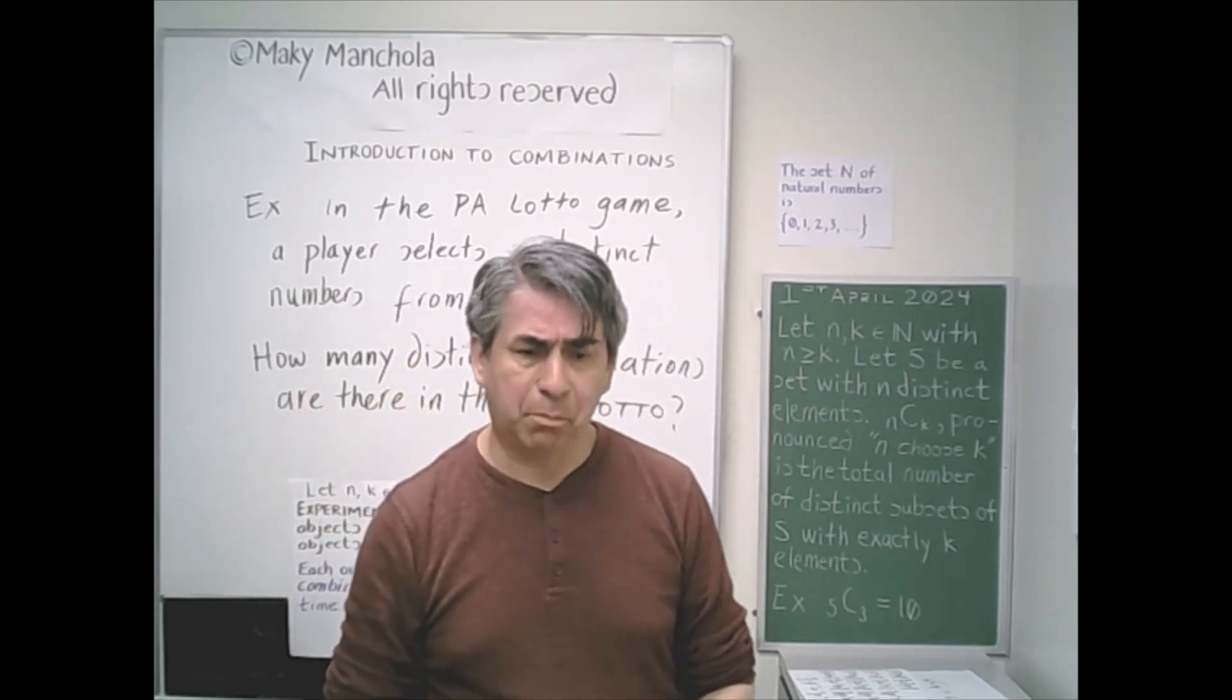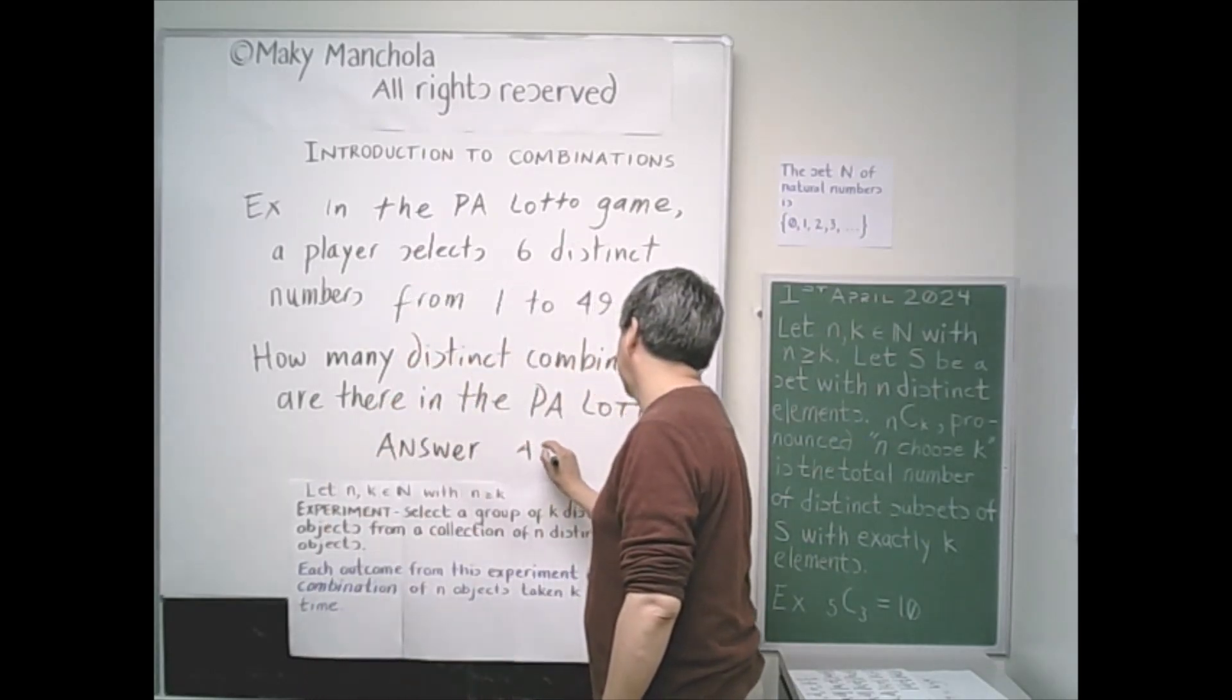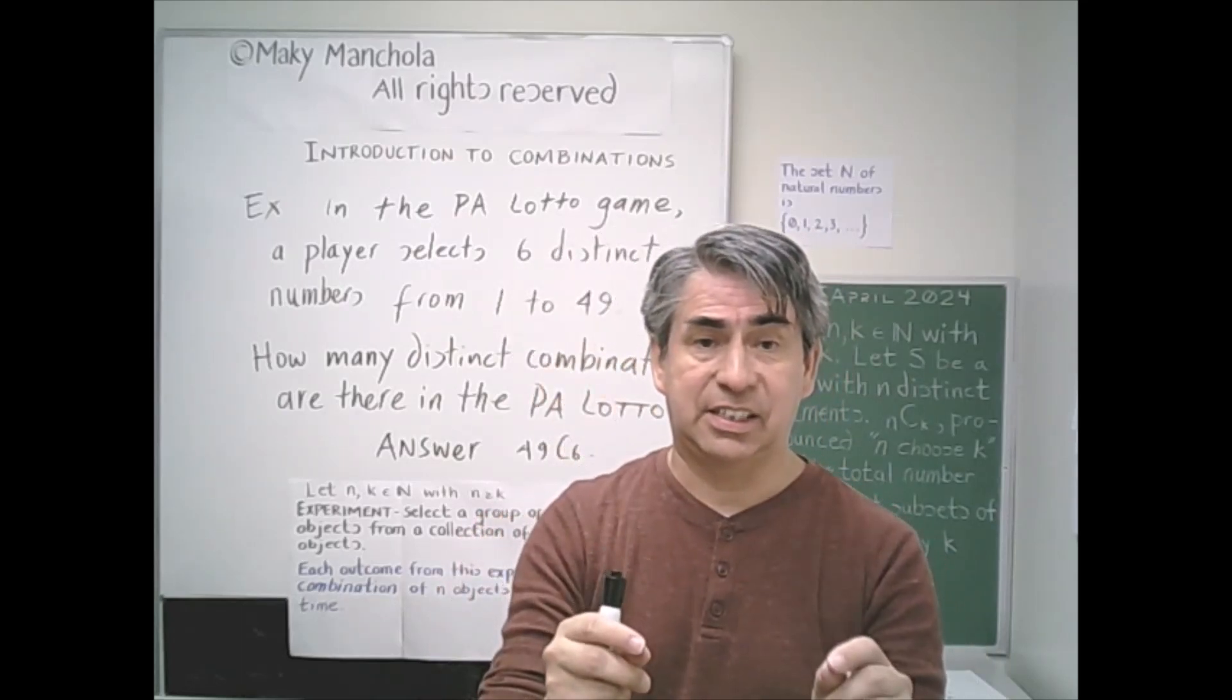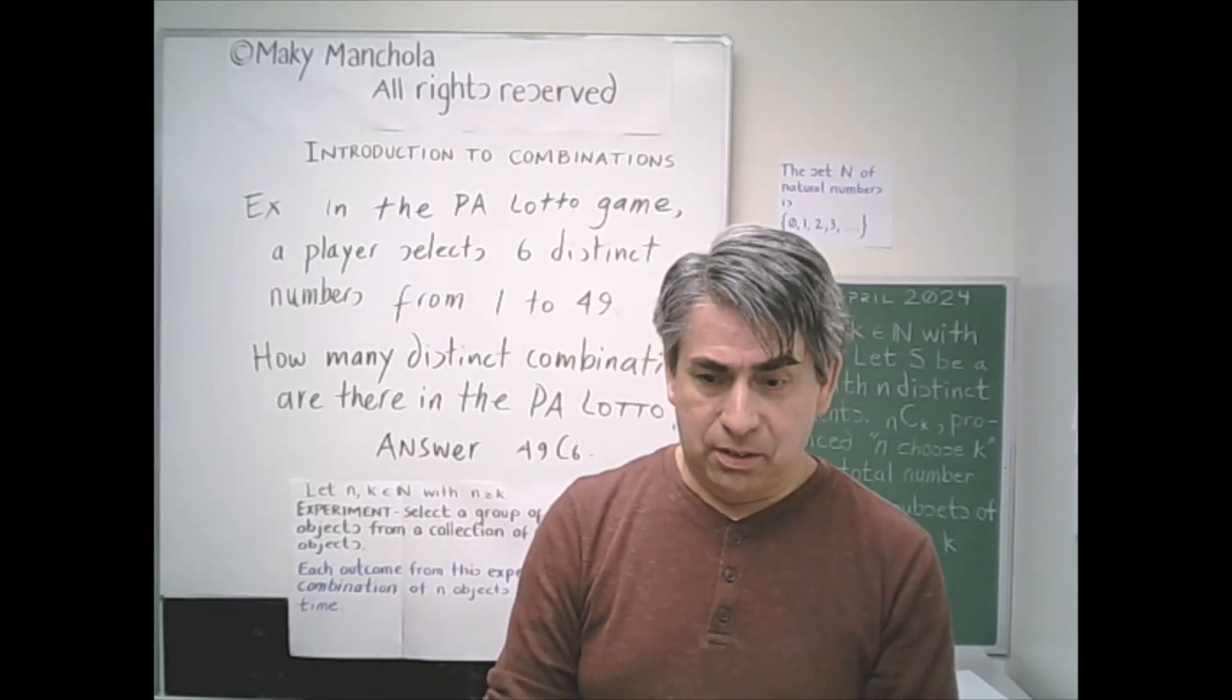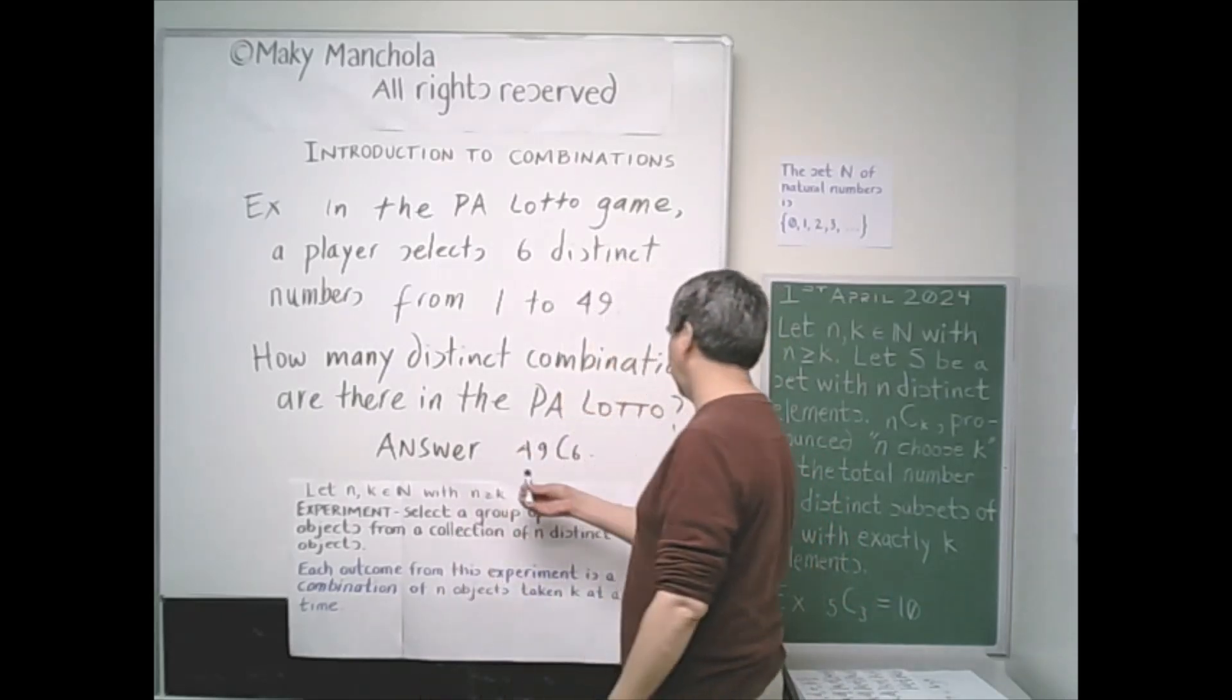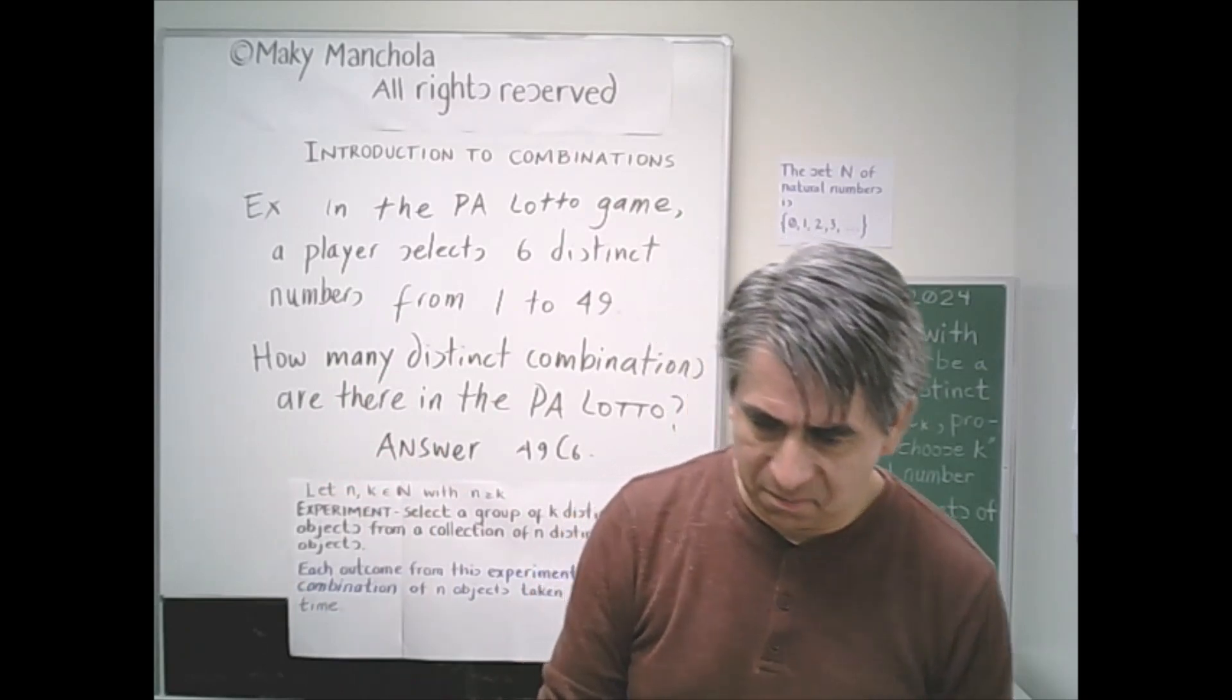Very big number, but very simple answer. I can give you an answer right now: 49 choose 6. Because in this game, we're selecting six distinct numbers from the collection from 1 to 49. So there is a combination of 49 objects selected six at a time. The total number is 49 choose 6, the total number of six element subsets of the set that has 1 through 49.